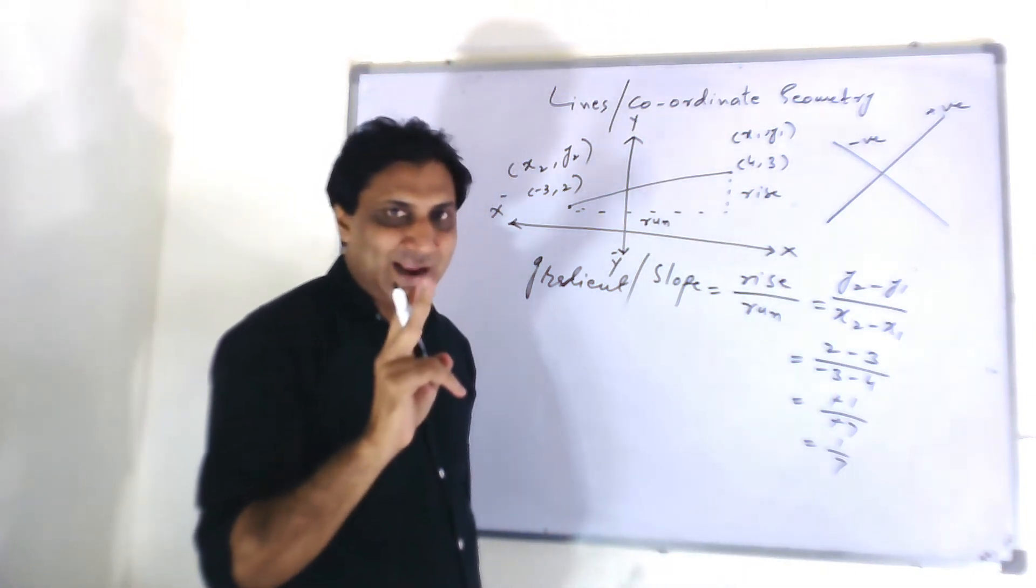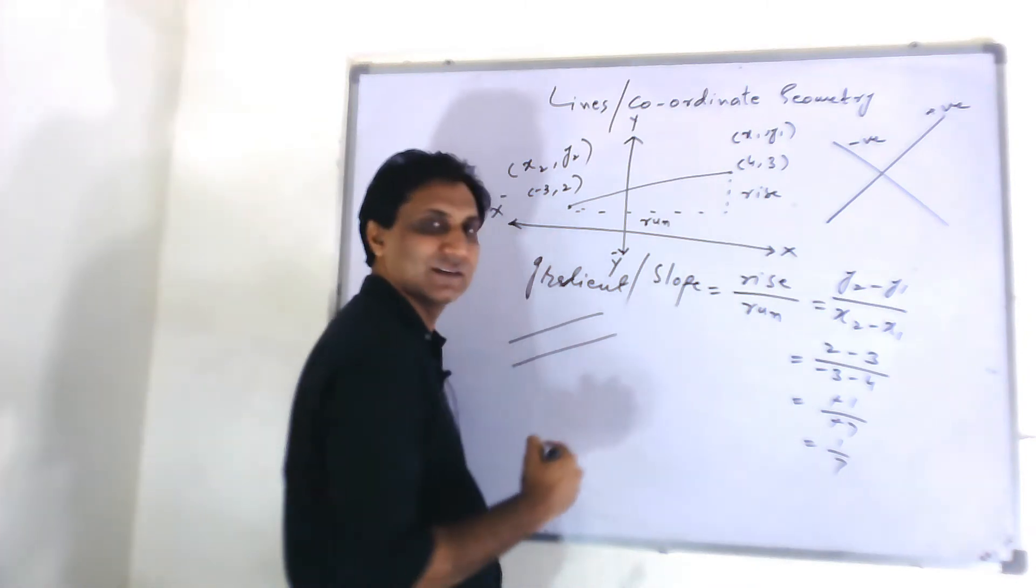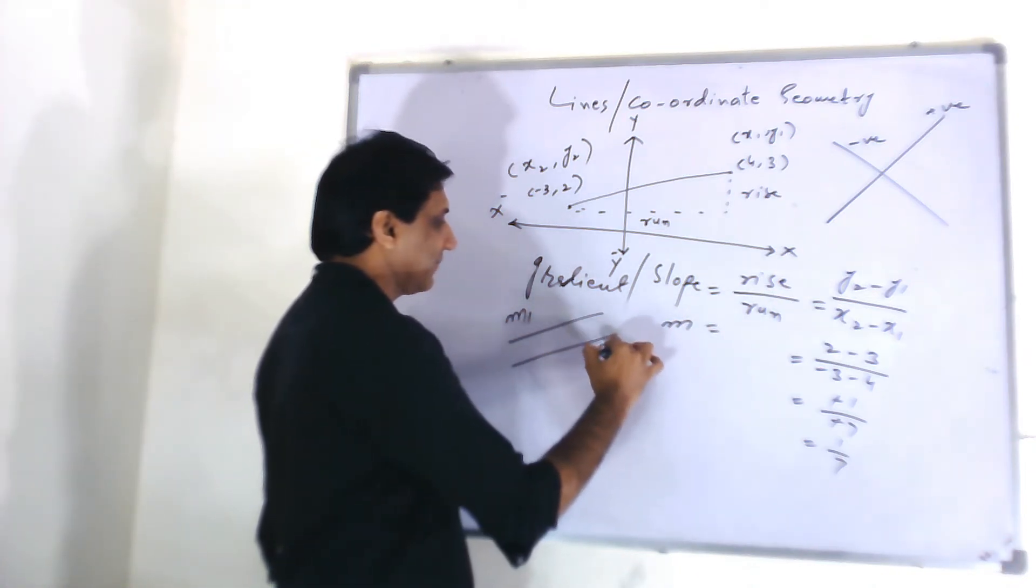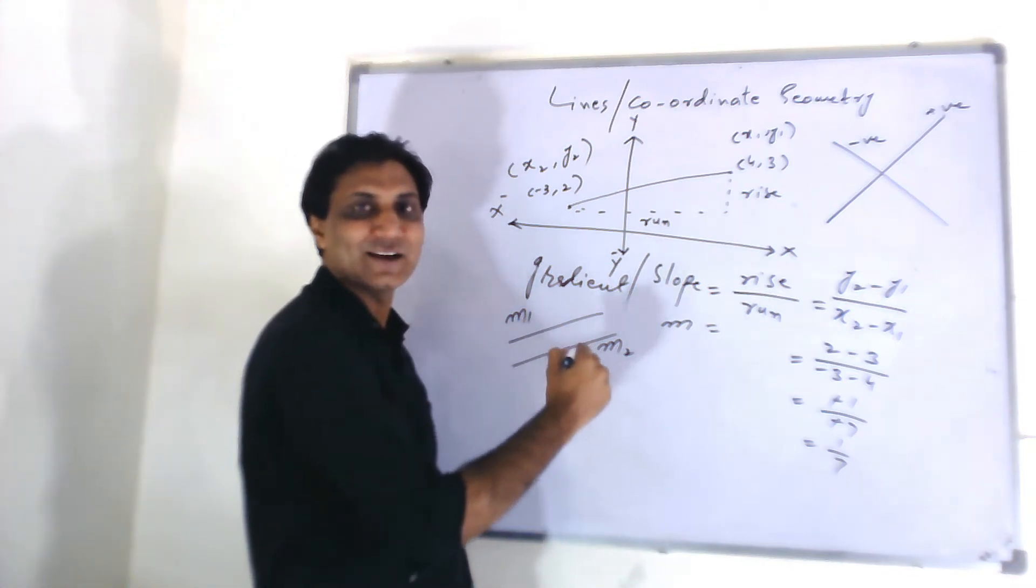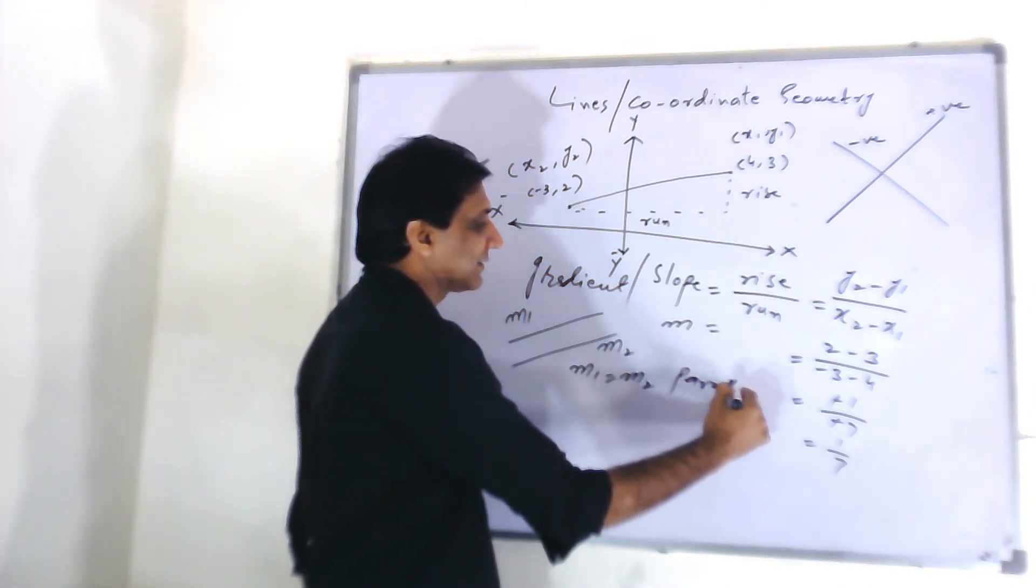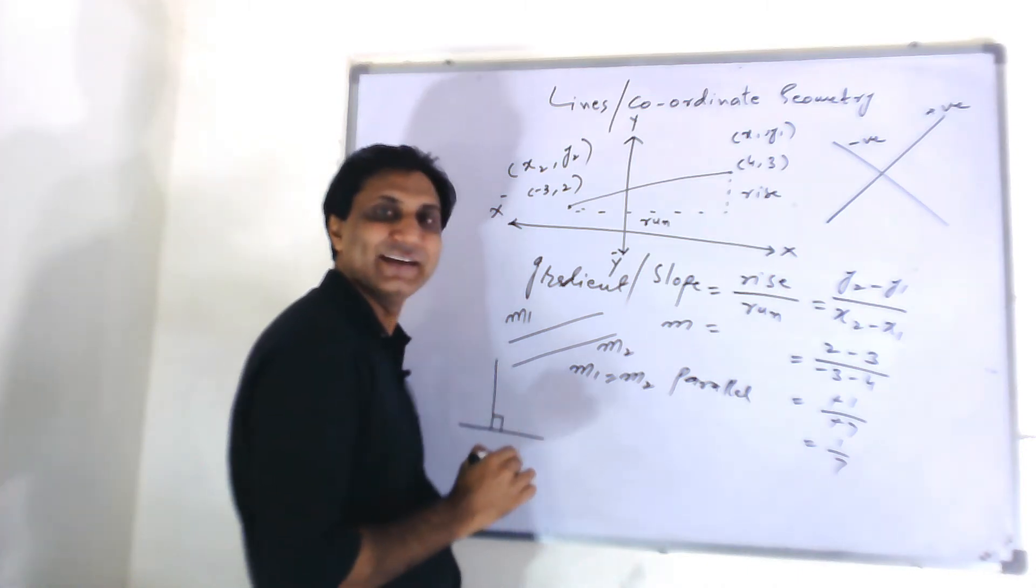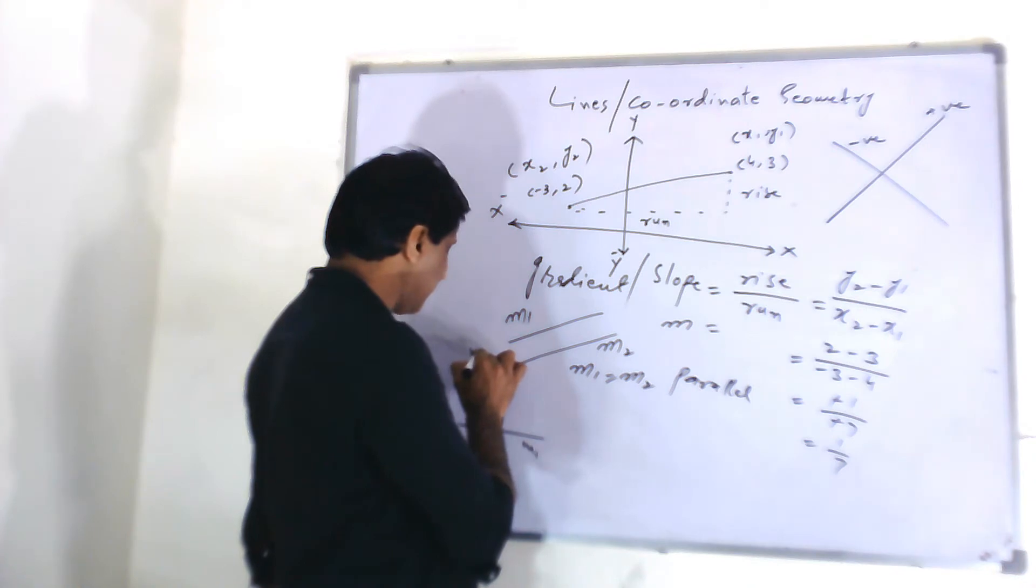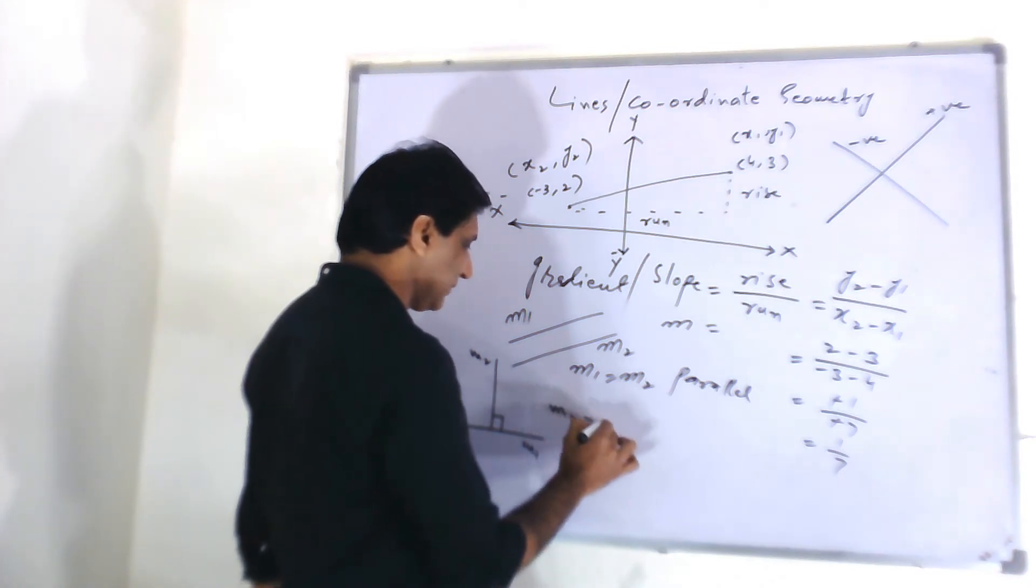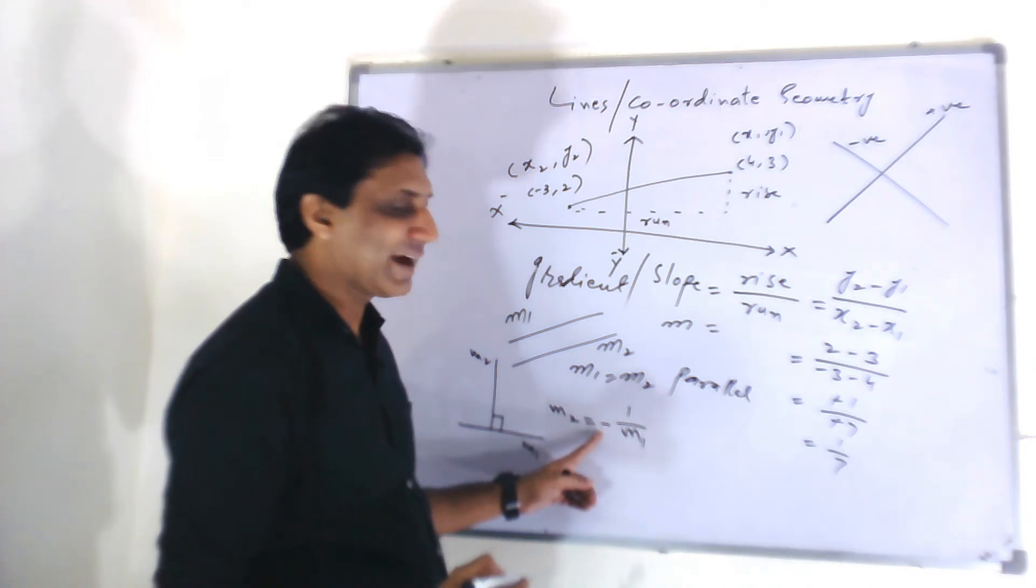The slope of two lines is equal if they are parallel. Like these two lines. The slope is usually denoted by small m. M1, M2 will be equal if both lines are parallel. M1 is equal to M2 for parallel lines. And if two lines are perpendicular to each other, like maybe 90 degree angle, then M1 and M2, they have a relationship. The relationship is this. M2 is equal to minus 1 over M1. Like you have to take the reciprocal of M1 and multiply it by negative sign.